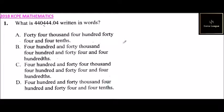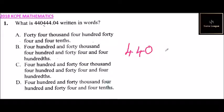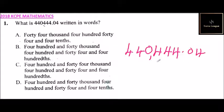Question number four: what is 440,444.04 written in words? You can write this number as four, then zero, then four, four, four, and point zero four. When you read this number it is four hundred and forty thousand, four hundred and forty four, point zero four.